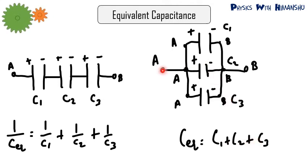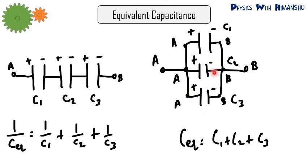To assign points in a circuit: if a point is A, then any point connected to it with no electrical component in between is also A. Similarly, if there is no component between two points, they carry the same label. Using this method, across C1 the points are A and B, across C2 the points are A and B, and across C3 the points are A and B — so they are all in parallel, giving C_eq = C1 + C2 + C3.